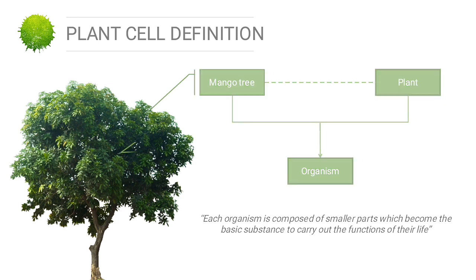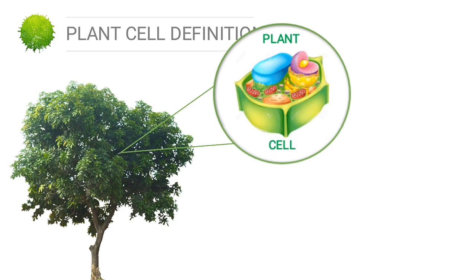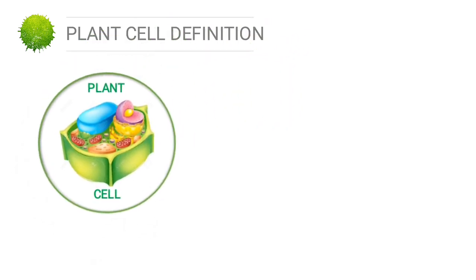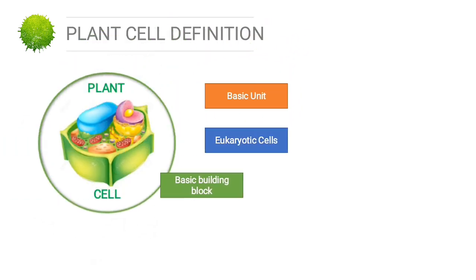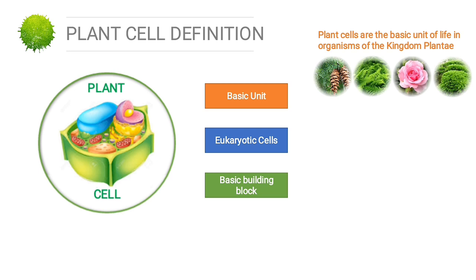These basic substances are what we call cells. So the mango tree is also composed of cells, and because the mango tree is a plant, its cells are plant cell types. Plant cells can be defined by three categories: basic unit, eukaryotic cells, and basic building blocks.